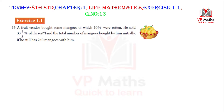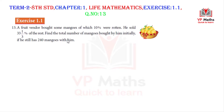A fruit vendor bought some mangoes of which 10% were rotten. He sold 33 and 1/3 percentage of the rest. Find the total number of mangoes bought by him initially if he still has 240 mangoes with him.